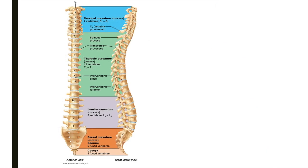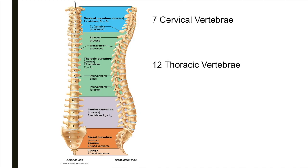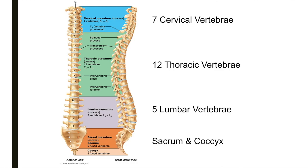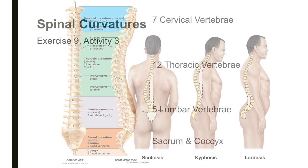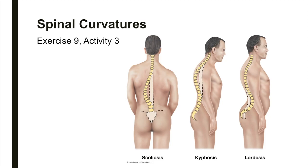The vertebral column is divided into seven cervical vertebrae, 12 thoracic vertebrae, five lumbar vertebrae, and the sacrum and coccyx. To remember the number of each type of vertebrae, think about eating breakfast at seven, lunch at 12, and dinner at five. We'll also review spinal curvatures such as scoliosis, kyphosis, and lordosis.